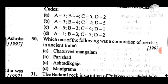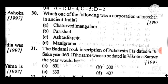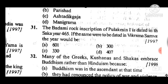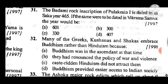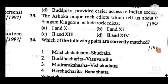Question 30: Which one of the following was a corporation of merchants in ancient India? Answer is D, Manigrama. Question 31: The Badami rock inscription is dated in Shaka era 465, and the answer is A, 601 — it relates to 601 in Vikrama era. Question 32 answer is C — many Greek, Kushana, and Shaka rulers embraced Buddhism rather than Hinduism because of the caste-written question.